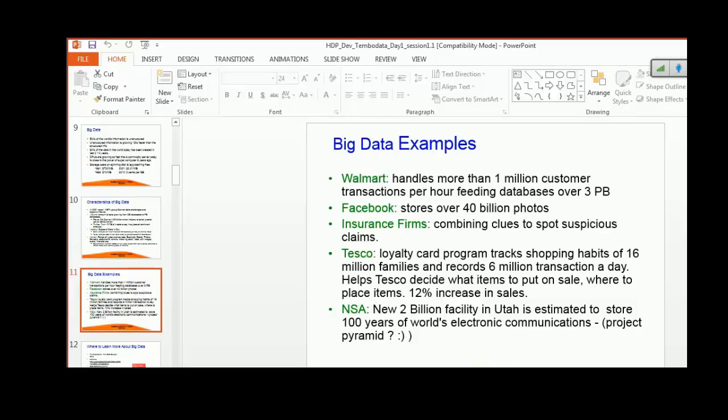Here are some big data examples. Walmart handles more than 1 million customer transactions per hour, feeding databases over 3 petabytes. A few years ago, Walmart analyzed their customer records and shopping transactions. They determined the most purchased products, times, and weekdays when customers shop most often. They found that during the end of Friday there are many people shopping compared to other days of the week.